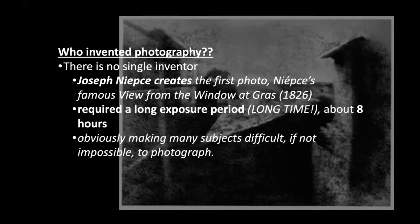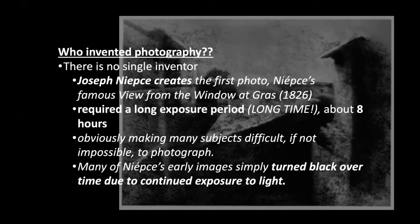That's a really long exposure time — you really can't have someone sitting there for that long. Many of his early images turned black over time due to continued exposure to light. But this first photograph, the View from Window at Gras, actually still exists today.